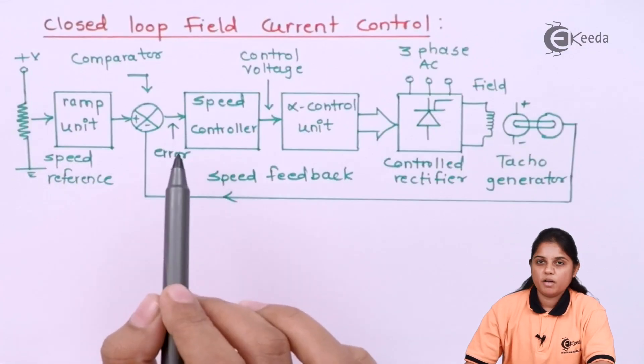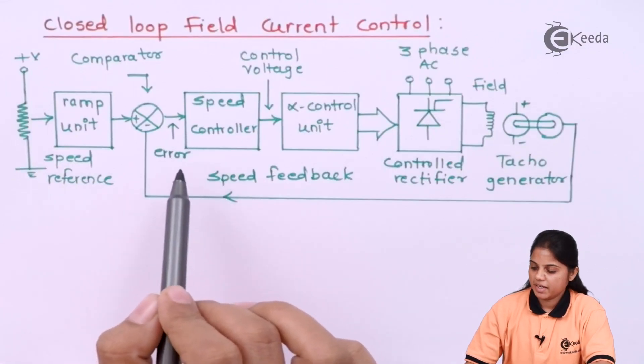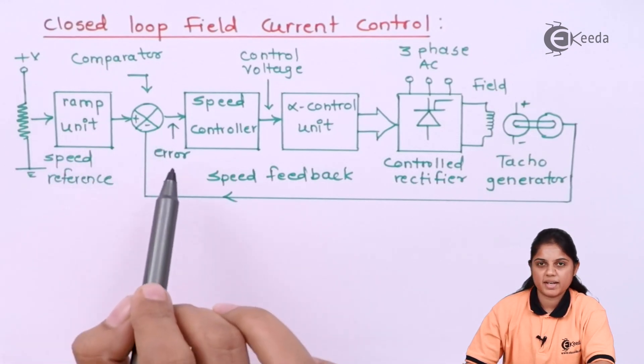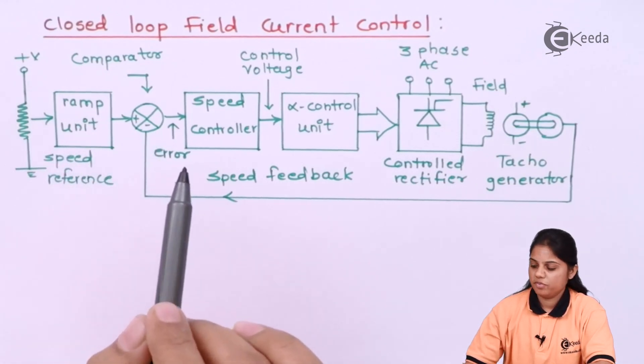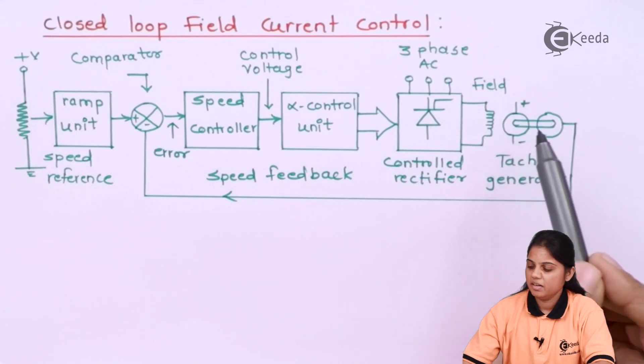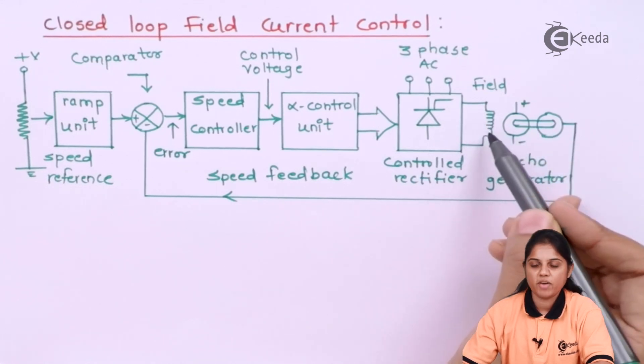Now, if you compare this diagram with the previous diagram, that is closed loop armature voltage control, it is exactly the same. The only difference is here the armature voltage is kept constant and the field current will be varied.